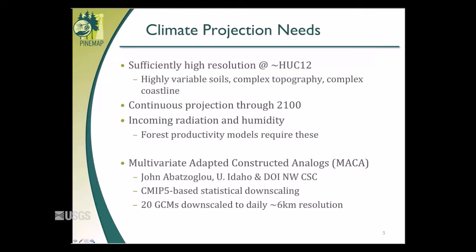Our solution was to use a product out of the University of Idaho by John Abatzoglou called MACA — Multivariate Adaptive Constructed Analogs. It identifies constructed analogs across the continental U.S. and uses those to downscale from global climate projections to local scale. MACA is the only product that meets all our requirements. Supported by the Department of Interior's Climate Science Centers, it uses the latest CMIP5-based global climate models to efficiently reach about six kilometer resolution using 20 global climate models, giving us a real spread to assess the range of future climates and baseline uncertainty.